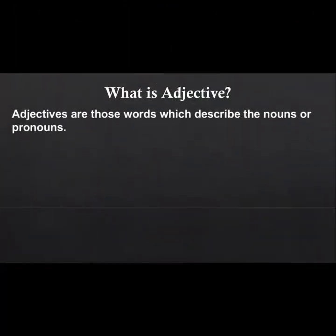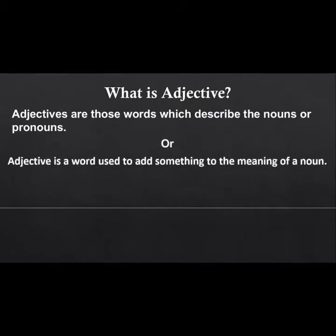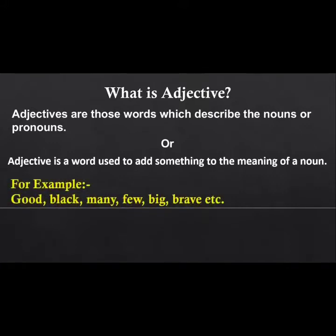Adjectives are those words which describe the nouns or pronouns. Adjective is a word used to add something to the meaning of a noun — it gives the noun additional information. For example: good, black, many, few, big, brave, etc.